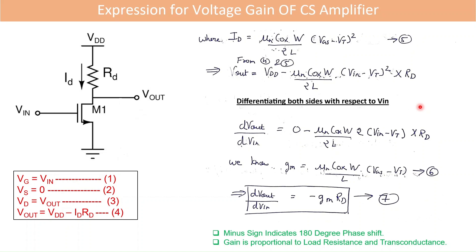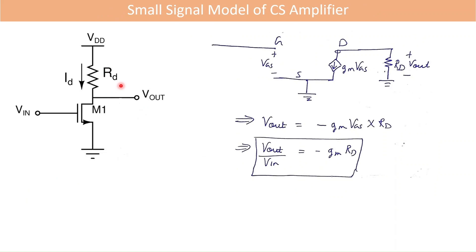Now let us derive the expression for voltage gain of the CS amplifier. We know the transistor must be in saturation region, so we use the expression for drain current in saturation only. Differentiating the VOUT equation with respect to VIN and substituting the GM value, we get the voltage gain expression equal to minus GM times RD. The minus sign indicates 180 degree phase shift, and the gain is proportional to both load resistance and transconductance.